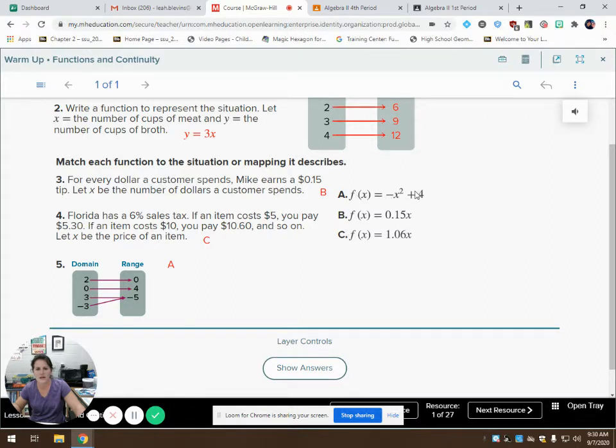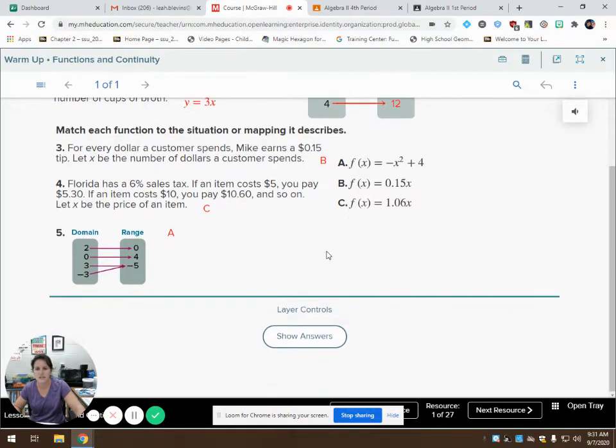So x would be the number of dollars. So that was, if I plug in a 1 here, 1, negative 1, or 1 squared, and then it becomes a negative. That gives me $3. So clearly it can't be A. So then we can check B. If I plug in 1 for x, 1 times 0.15 is 0.15. Plug in 2, 0.15 times 2 is 0.30.